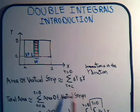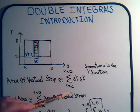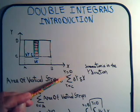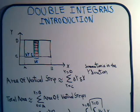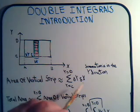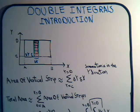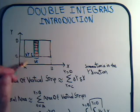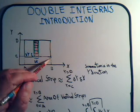This is the area of one of the shaded regions, and we're going to add up all these areas going from y equals c to y equals d. Notice the summation is in the y direction, and delta x essentially remains constant. To get the total area, we add up the area of all the vertical strips from x equals a to x equals b.